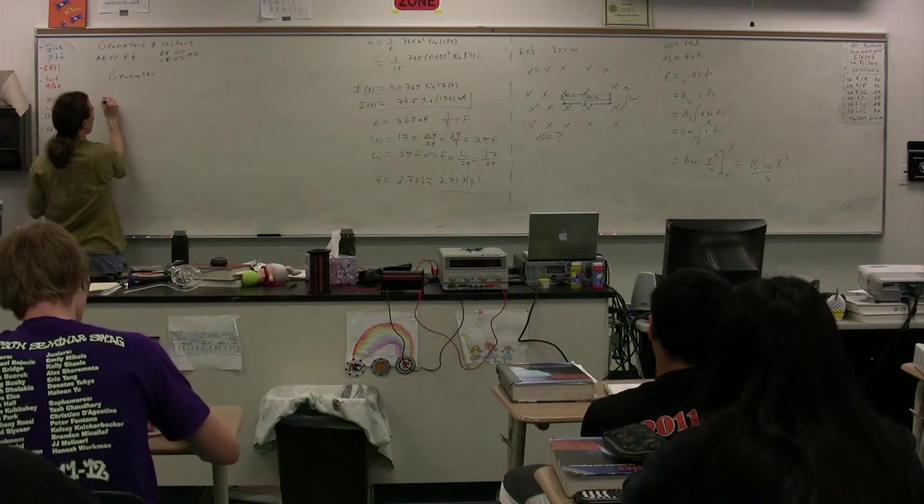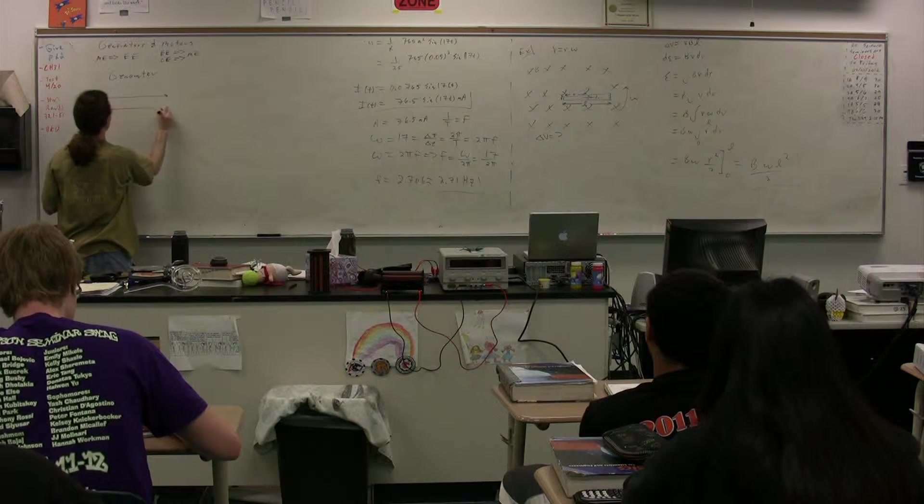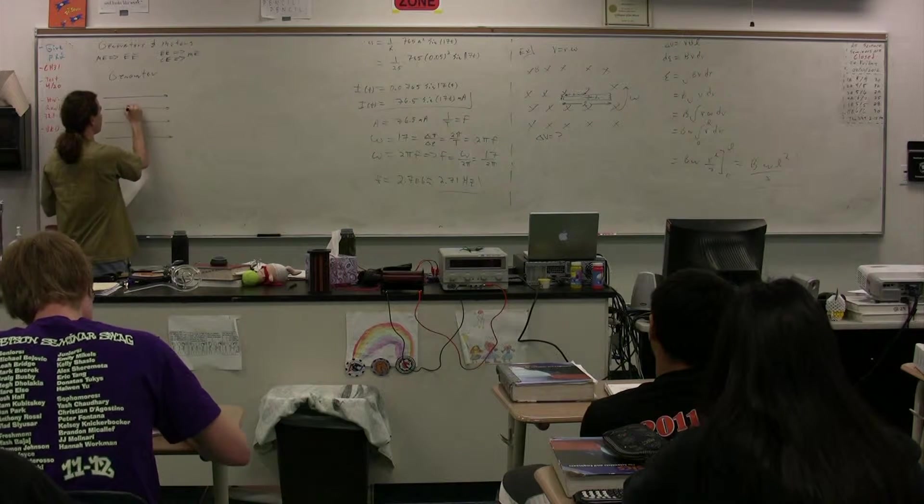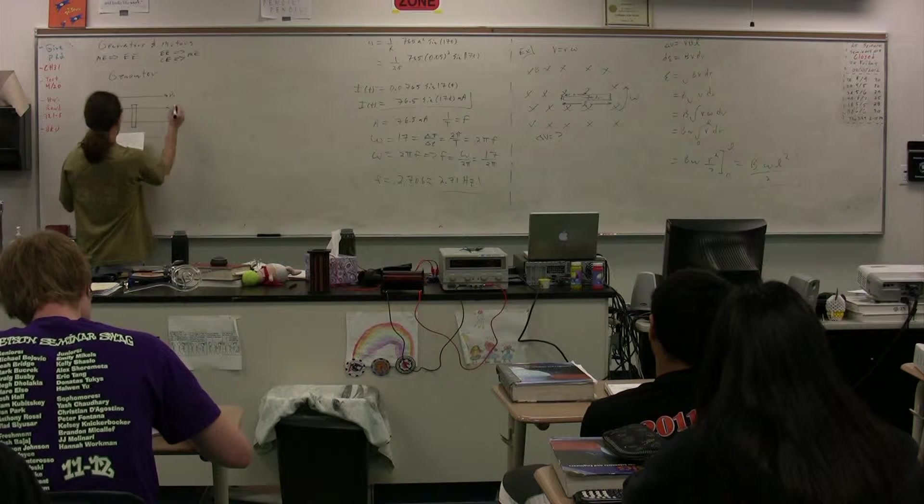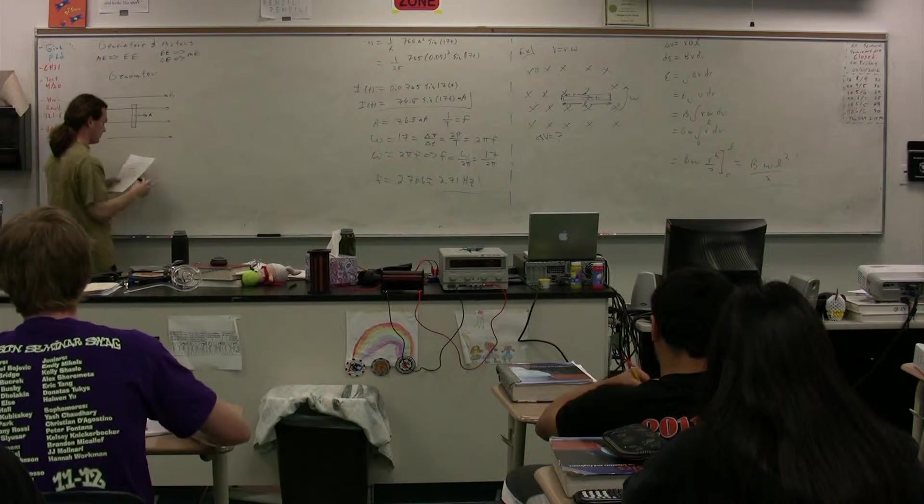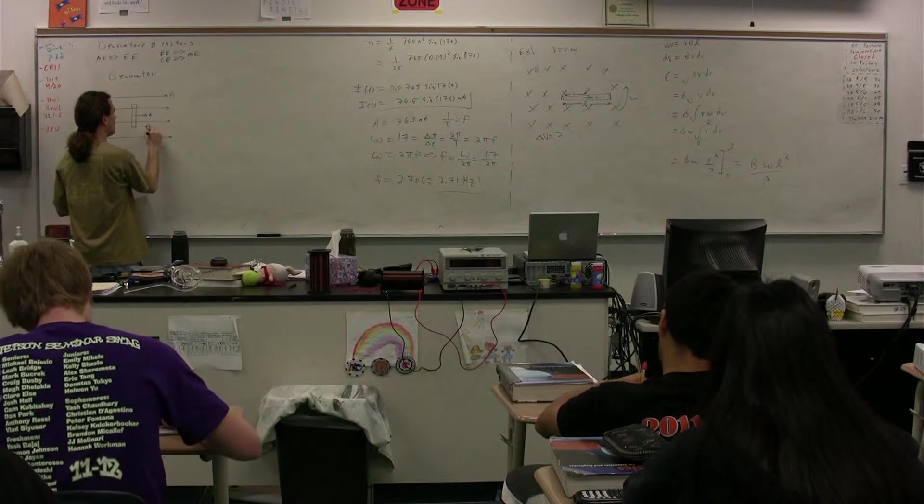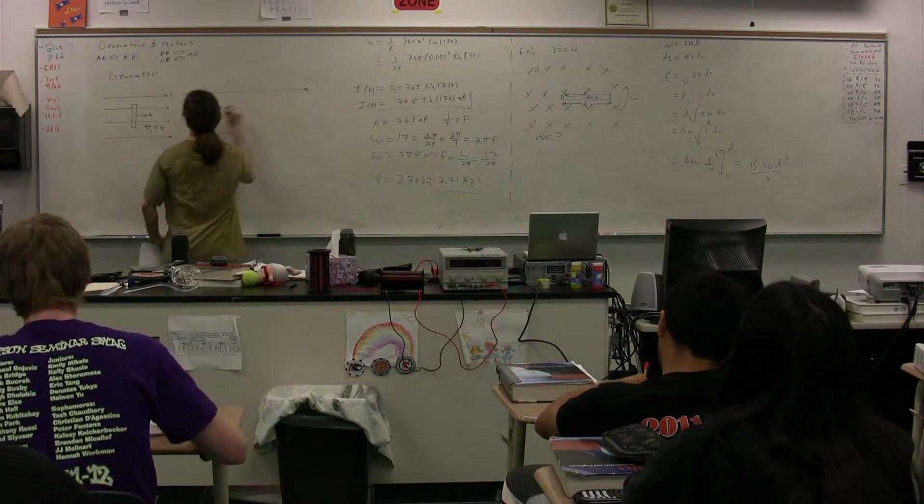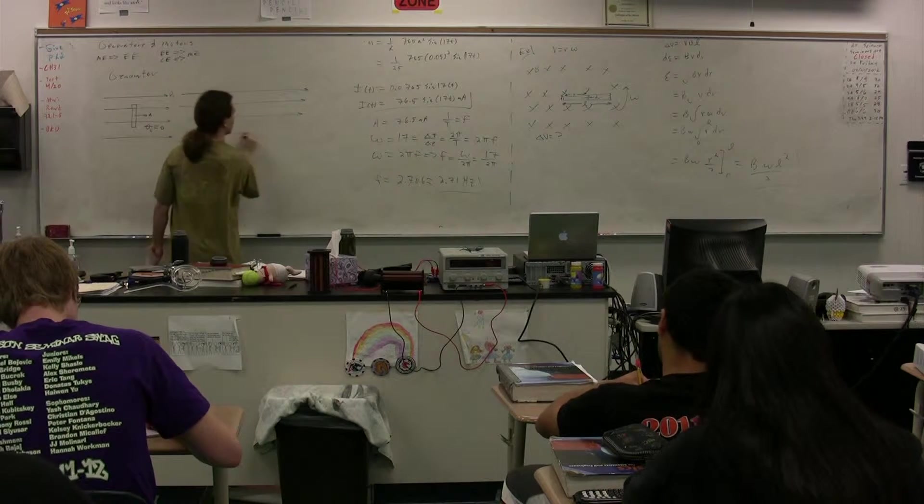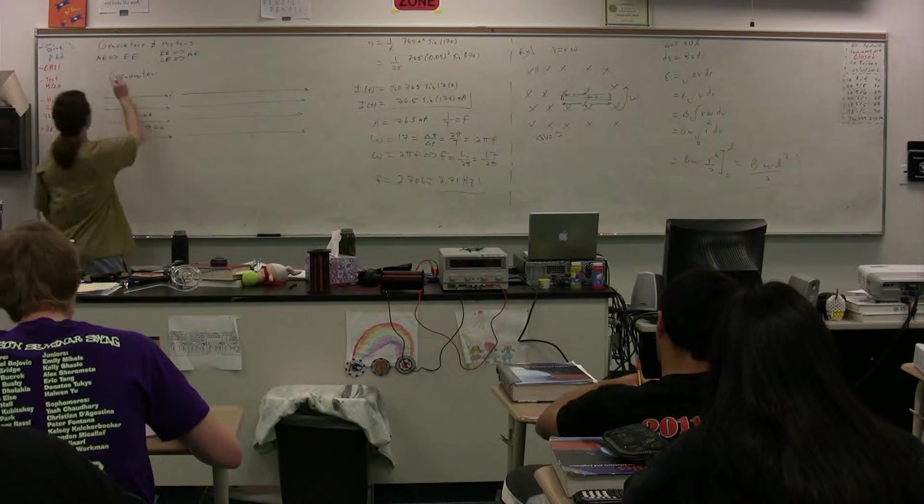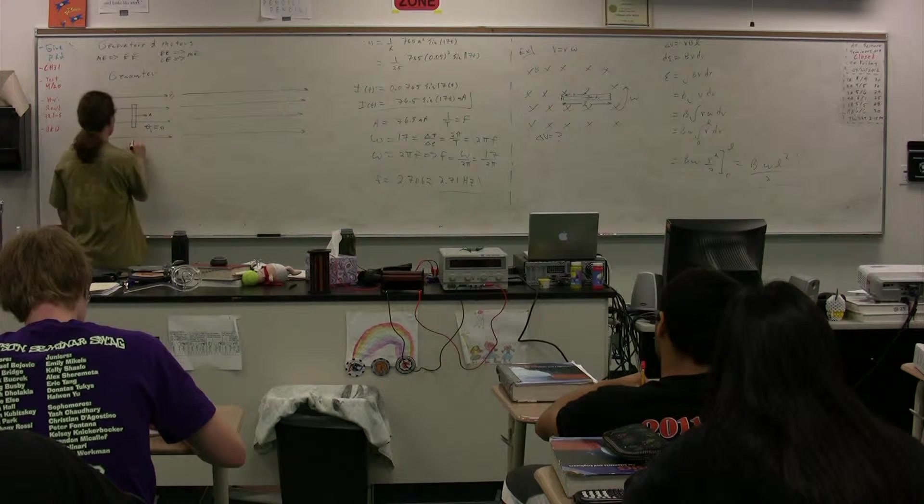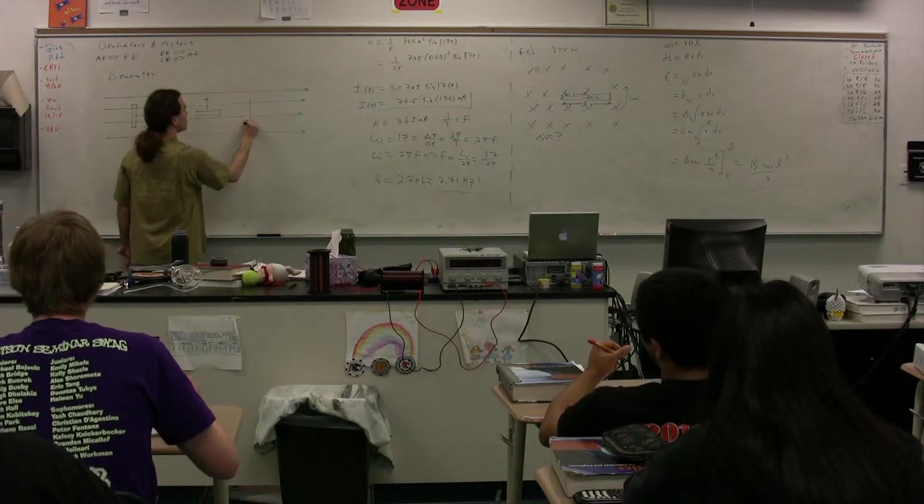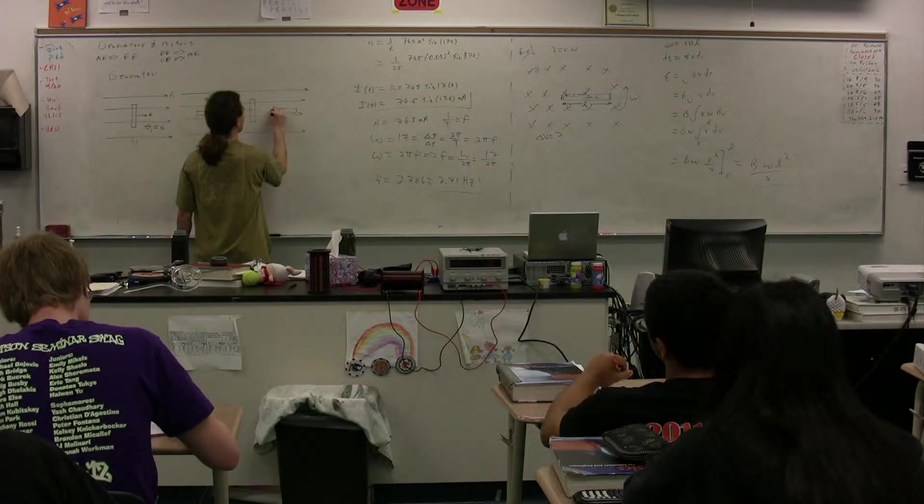A generator, basically what you have in a generator is you have a loop in a magnetic field. Here is the area vector of the loop, which means theta initial is equal to zero. We then take that loop and we turn it through some mechanical means in our magnetic field. So this will be position 1, then we turn it to position 2, position 3, and position 4.